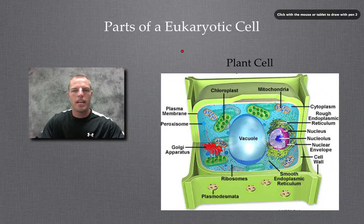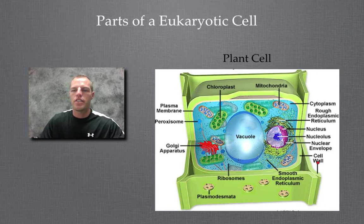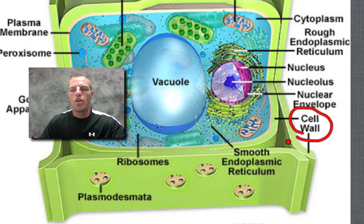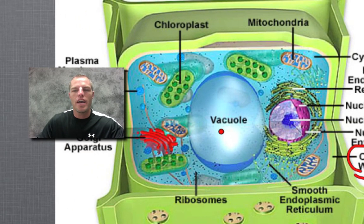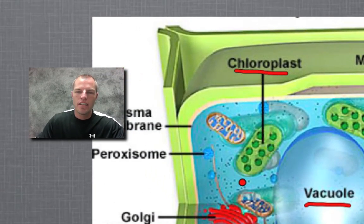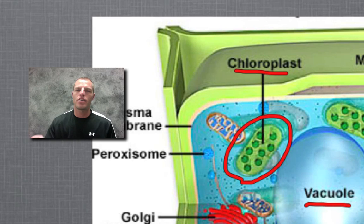Now let's look at the plant cell. There are three organelles that are different from the eukaryotic animal cell. First is the cell wall — a rigid structure that holds the plant cell's shape and protects it. Animals are one kingdom that don't have cell walls. Plant cells also have a large central vacuole. Finally, there's the chloroplast, which assists in photosynthesis — something plants do but animals don't. If you see chloroplasts under a microscope, you know it's a plant cell.